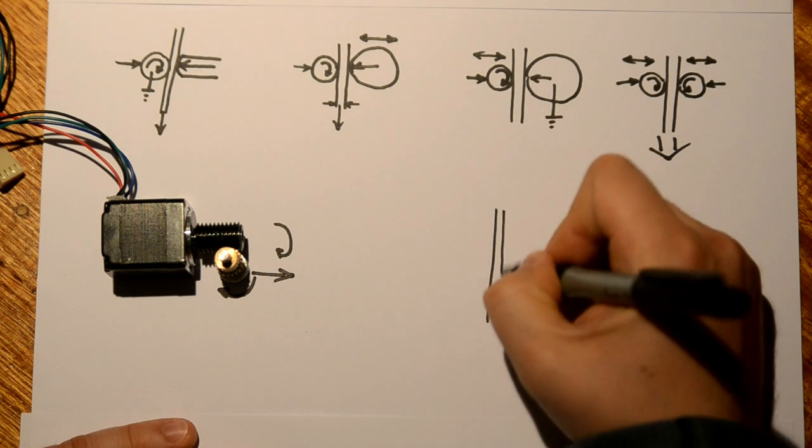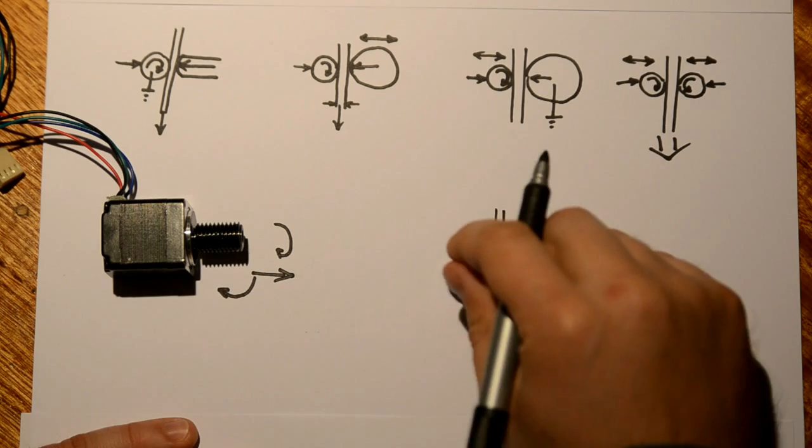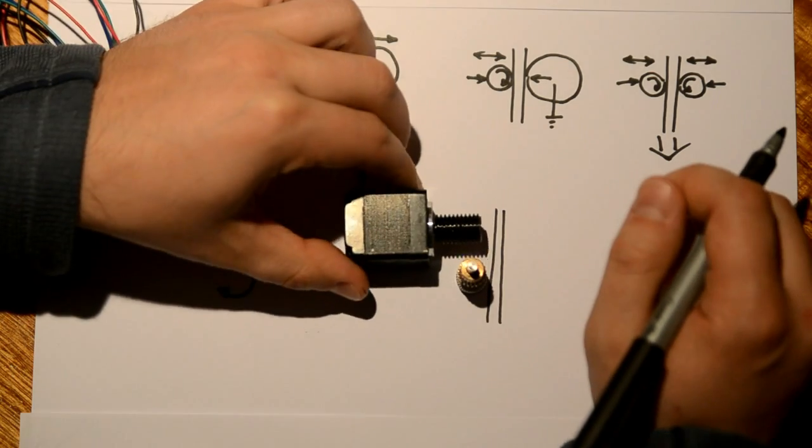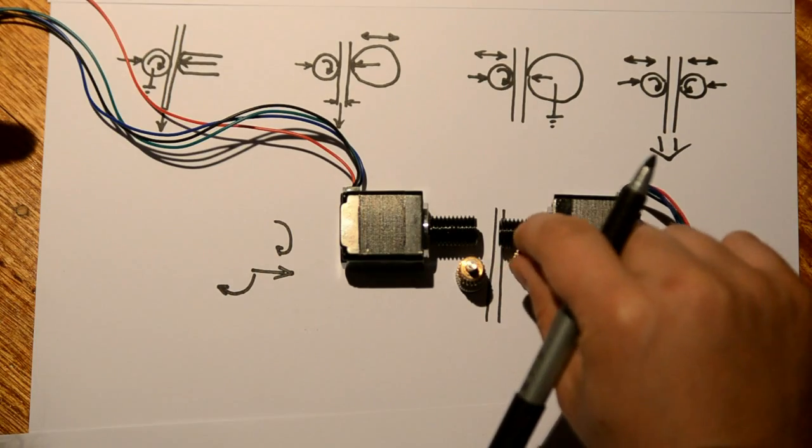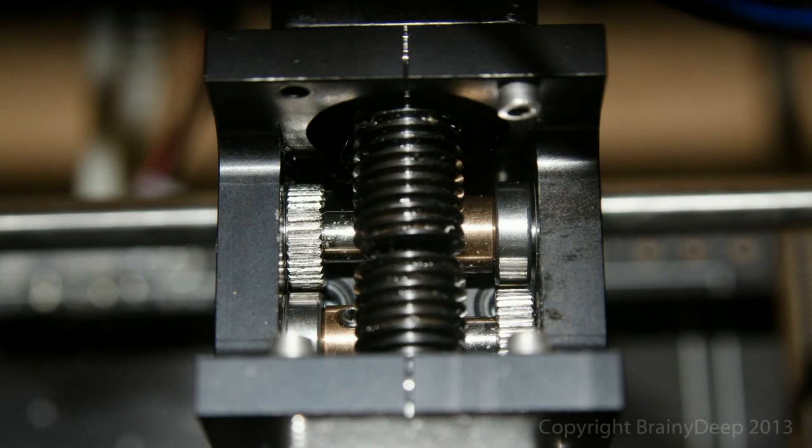Two motors are used, with a worm gear pair on either side of the filament. Each motor and worm gear combination works exactly as described before.